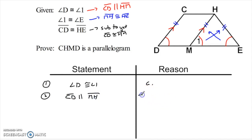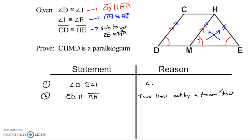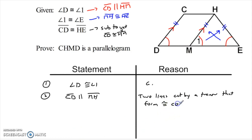How do I know that's true? Those are corresponding angles — not alternate interior angles. What kind of angles are D and 1? Corresponding. So two lines cut by a transversal that form congruent corresponding angles are parallel.